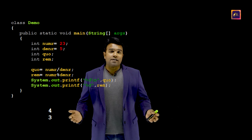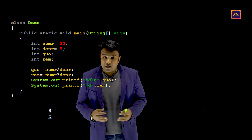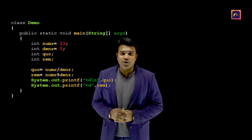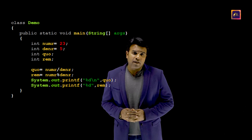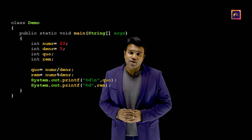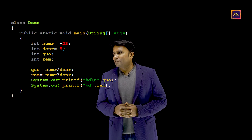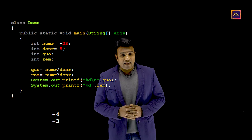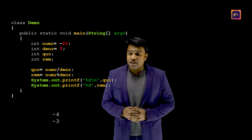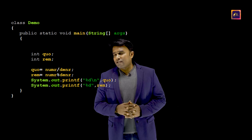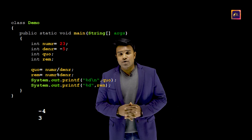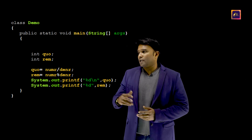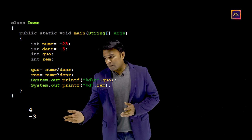But what if the numerator is a negative number? What if the denominator is a negative number? What if both are negative numbers? Let's explore. Let me consider the same program with a negative numerator and a positive denominator like this. When I execute, this is the output. I would execute the same program with a positive numerator and a negative denominator like this — this is the output. And I would execute the program with both the numerator and the denominator as negative like this, and this is the output.